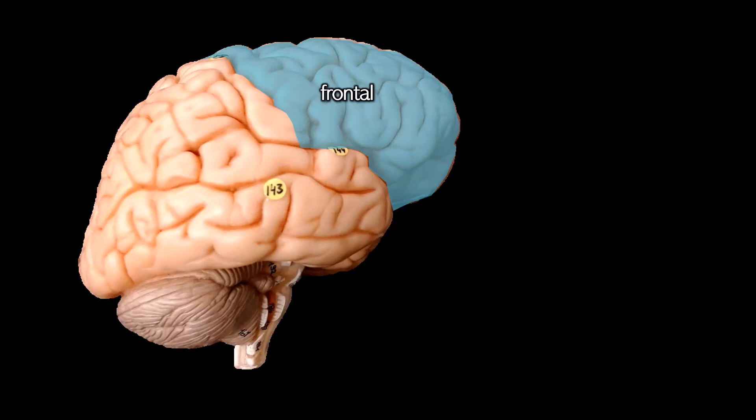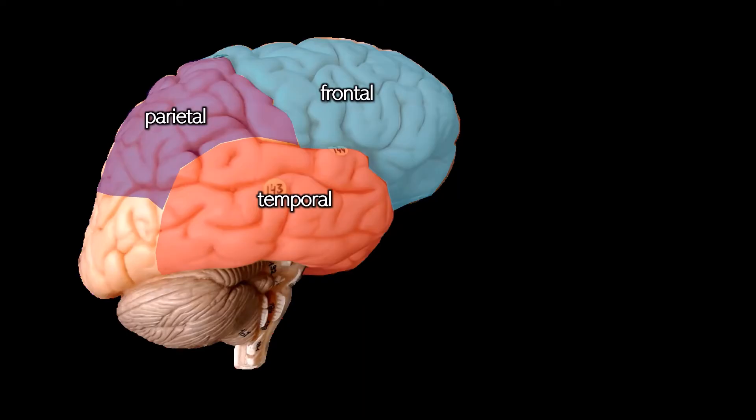The frontal lobe is where all of your decision making, planning, and general adulting is happening. The parietal lobe contains the somatosensory cortex, which gives you your sense of touch. The temporal lobe has your auditory cortex as well as Wernicke's area. Wernicke's area allows you to interpret language, and it makes sense that it would be close to the auditory cortex. The occipital lobe contains the visual cortex.